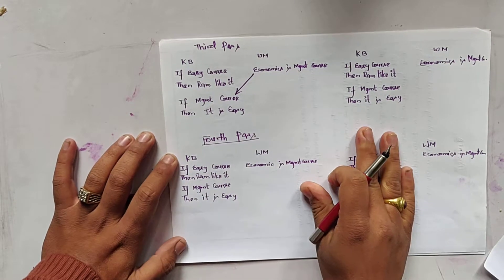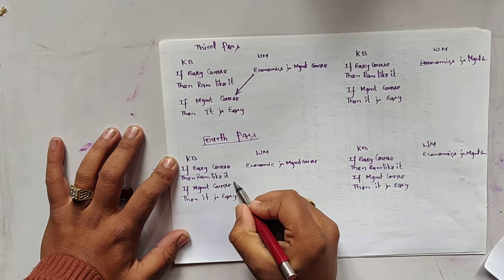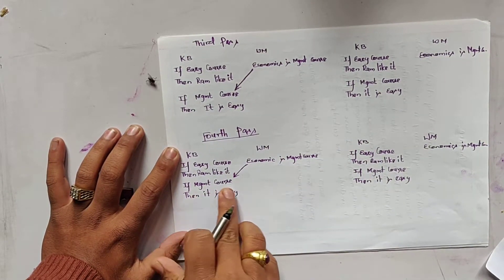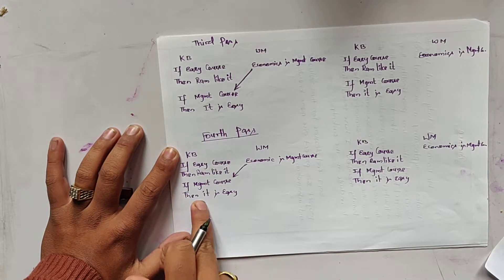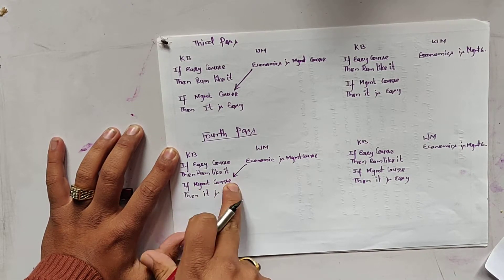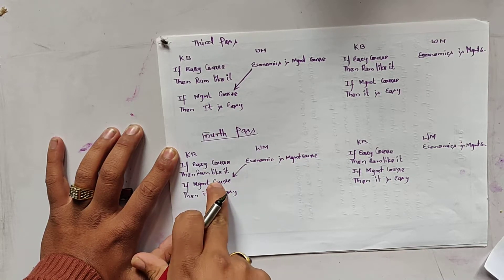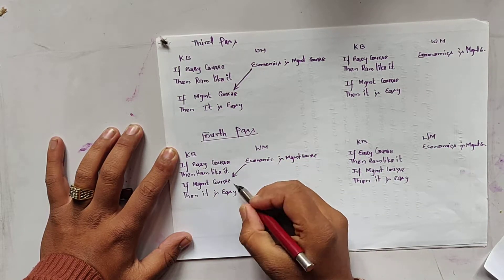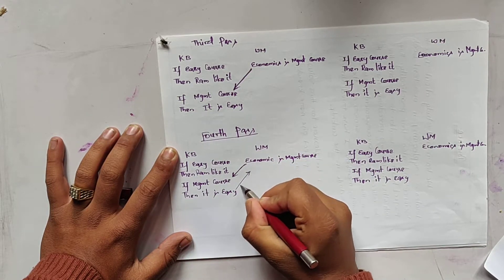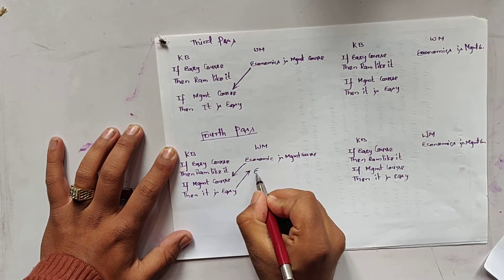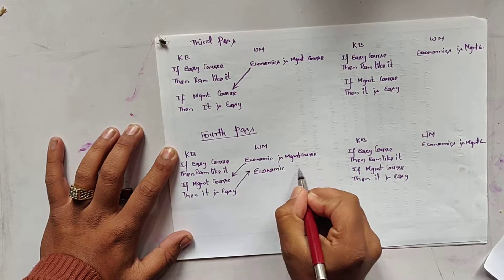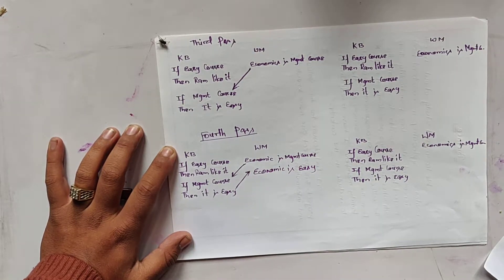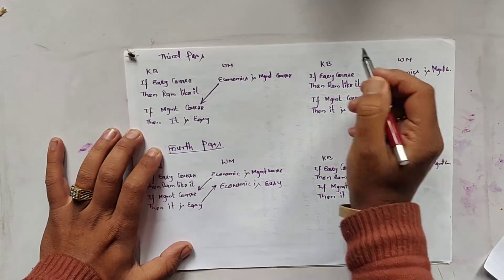In the fourth pass, we found that 'management course' is in the if-part and the then-part gives the conclusion. This is the premise and this is the conclusion, so we write the conclusion in working memory: 'economics is easy.' This is the fourth pass.